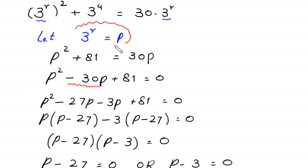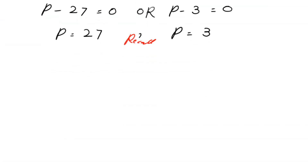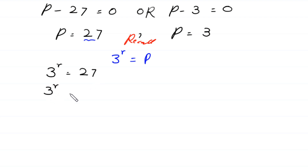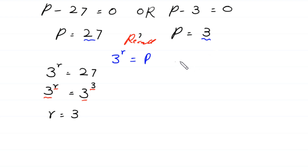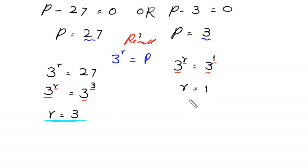Recalling that 3^r = p: first putting p = 27, we get 3^r = 27 = 3³, so r = 3. Then putting p = 3, we get 3^r = 3 = 3¹, so r = 1. We now have two values: r = 3 and r = 1.